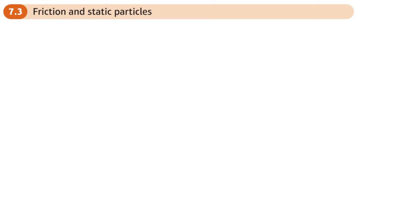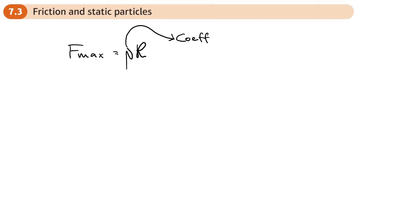This is the third section of the chapter on statics, and now we introduce friction. The maximum friction force is mu times R, where mu is the coefficient of friction, and its value is between zero and one.